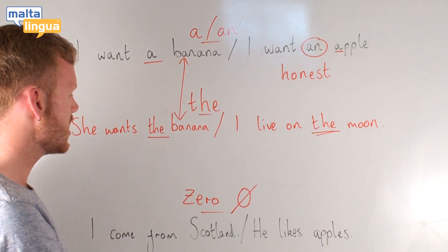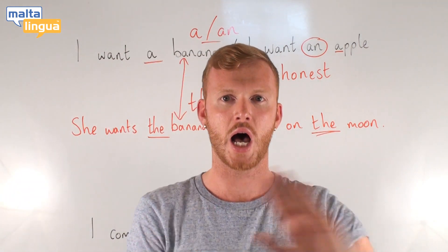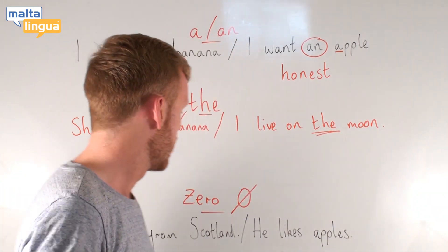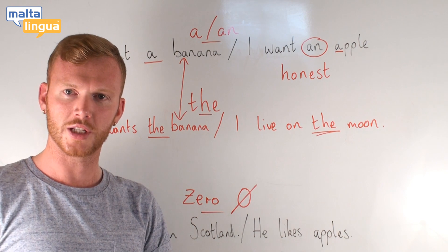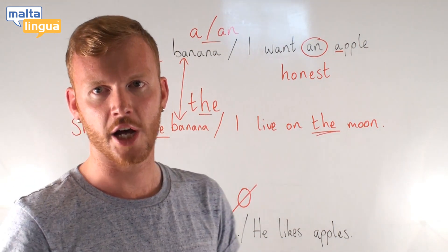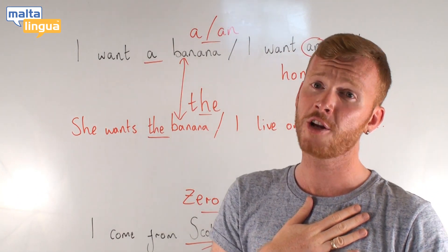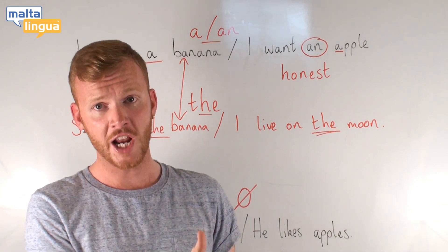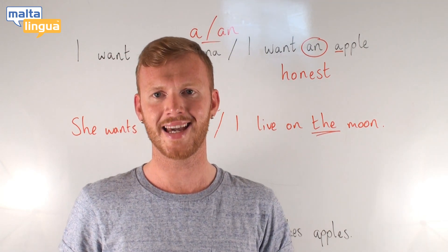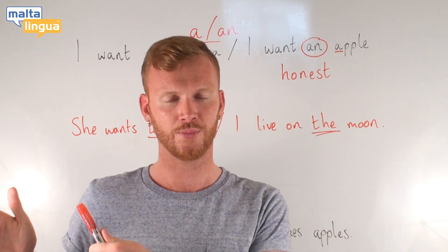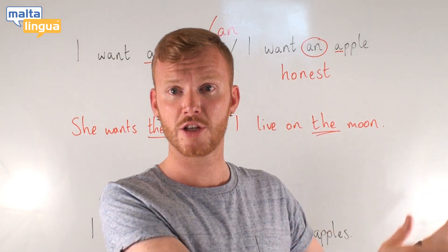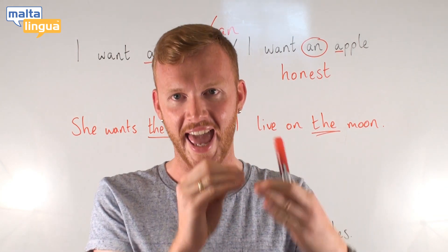And then there is the zero article — when we do not use 'a', 'an', or 'the'. I come from Scotland. Scotland is a country, my home country. For countries and cities generally, we do not use an article before them. We do not say 'I live in the Malta' — we say 'I live in Malta'. We do not say 'You live in the Germany' — we say 'You live in Germany'. No article is required.